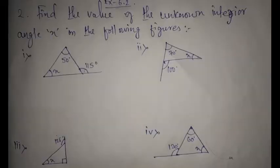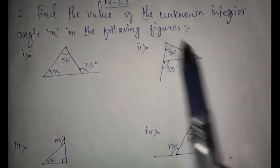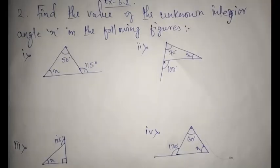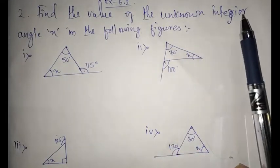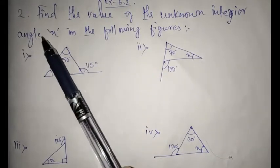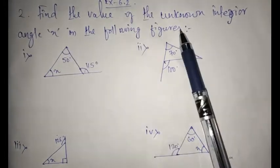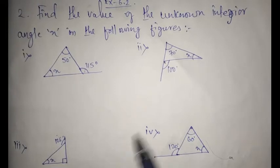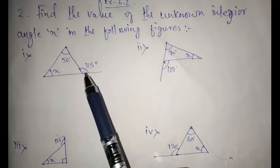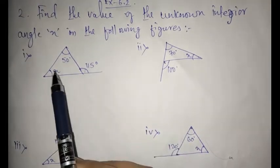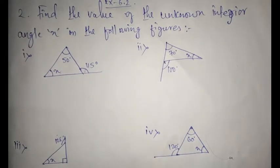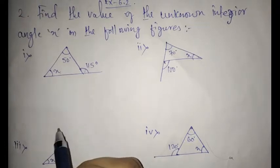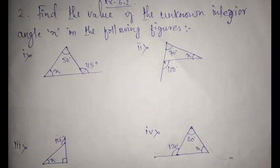So students, here we have question number two from Exercise 6.2. The question is: find the value of unknown interior angle x in the following figures. So till now you have been finding the exterior angle; now you have to find the interior angle. Using the similar formula which we did yesterday, we are going to find this one also.